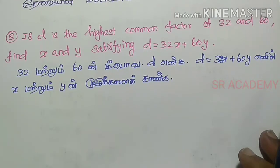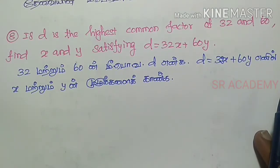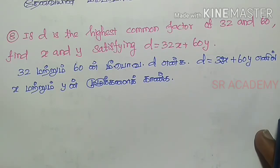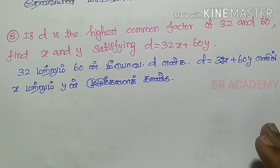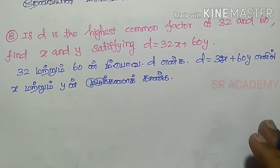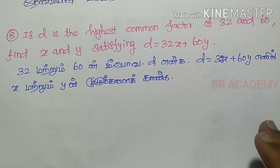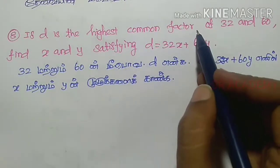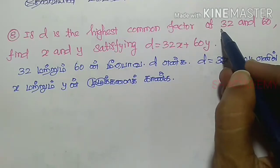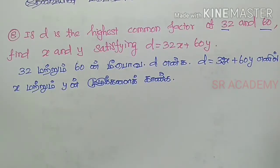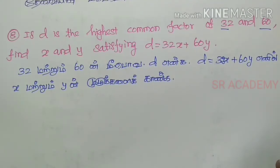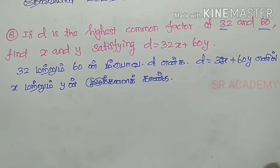In Tamil: 32 and 60's HCF is D. Find X and Y where D equals 32X plus 60Y. First, we need to find D. We need to find the HCF of 32 and 60.